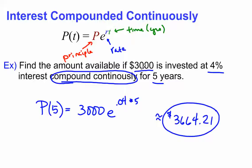We have an example, $3,000, 4%, compounded continuously for 5 years. So here's our P, our R, and our T, and we plug them in.